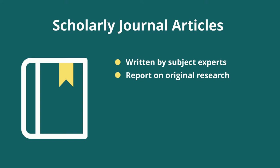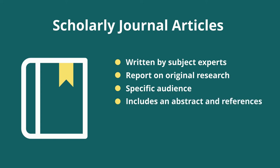They'll cover original research or topics in great detail and will often make complex arguments. The second detail to think about is who is the intended audience for the article. Journal articles are written for other scholars, researchers, and students. They may have an abstract, research details, and will always include a reference list. Journal articles do not usually include photos unless it's important to the original research, and they never include advertisements.